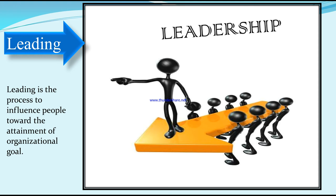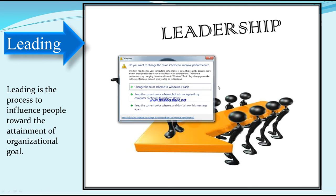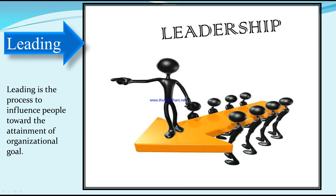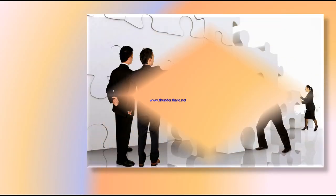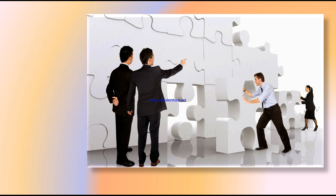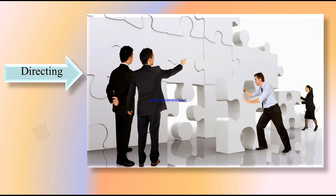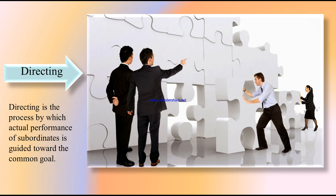Now here, someone is pointing out to say something to a subordinate — one female and one male. The boss is trying to say something to the subordinate. This is directing. Directing is the process by which the actual performance of subordinates is guided toward the common goal.